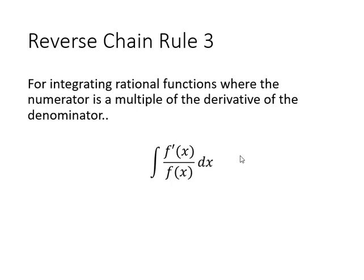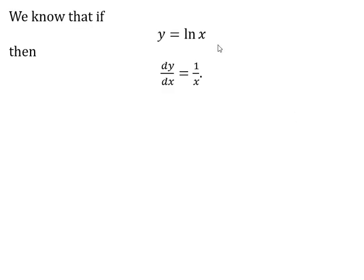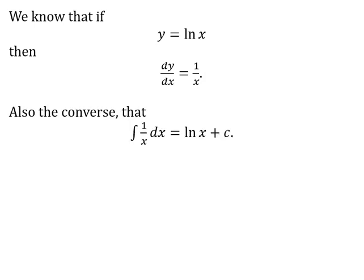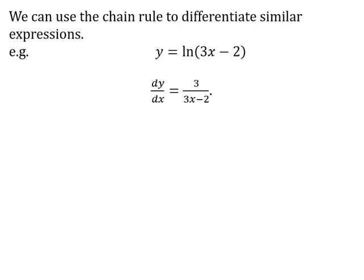This idea is perhaps not as obvious as the others, but you have already met the fact that if y equals ln(x), then dy/dx equals 1/x. We can say that the converse must be true — therefore the integral of 1/x must be equal to ln(x) plus a constant. We can use the chain rule to differentiate slightly more complex functions. For example, if y equals ln(3x − 2), then differentiating using the chain rule gives 3 over (3x − 2).